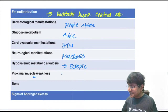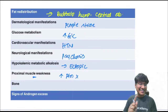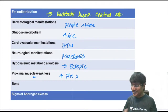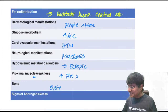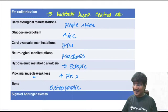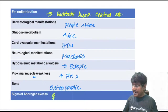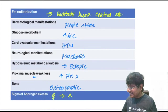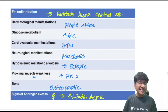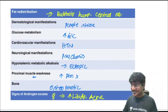Proximal muscle weakness in Cushing's is due to increased protein breakdown. Bones become osteoporotic. Signs of androgen excess are seen in females — increased libido and acne.